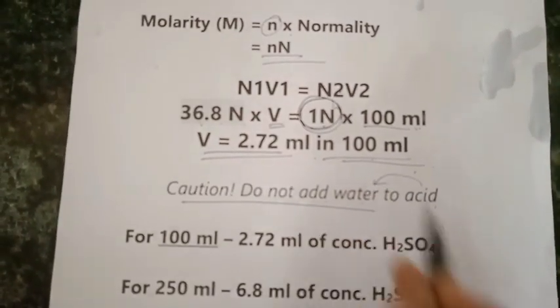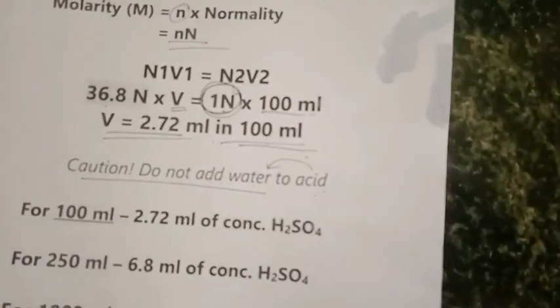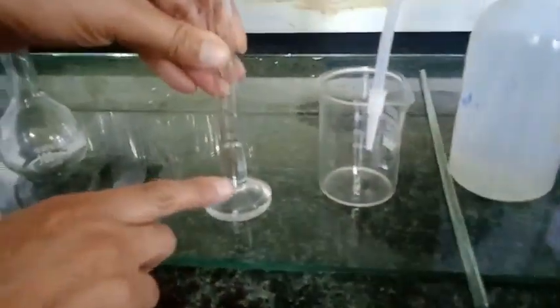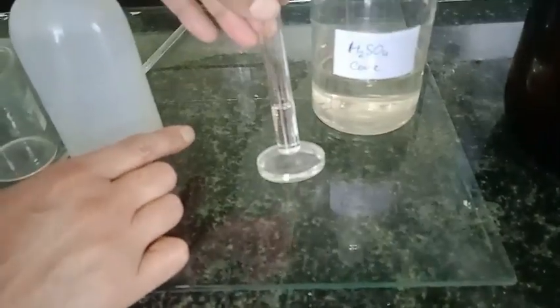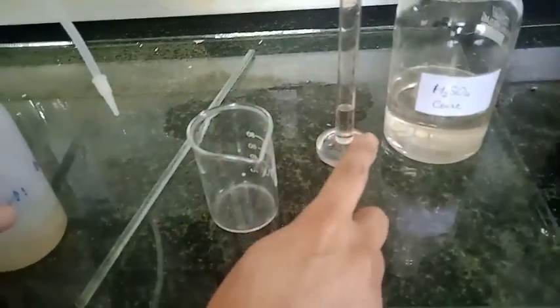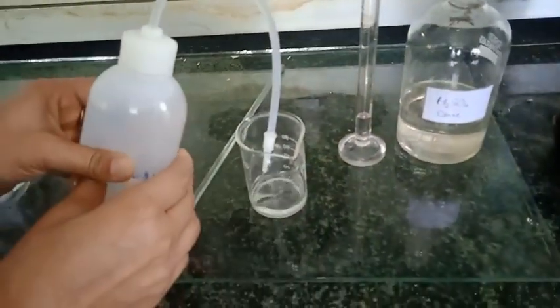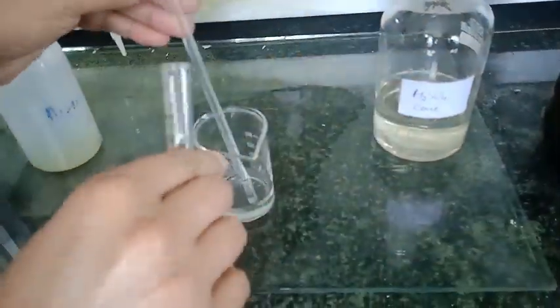Here the calculated amount, 2.7 ml, I have transferred to this measuring cylinder. In this beaker I have taken some amount of distilled water, and with the help of this glass rod I am just going to add this concentrated H2SO4.